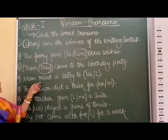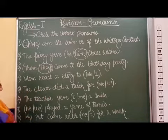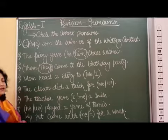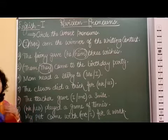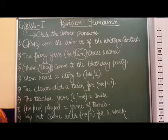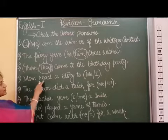Okay. Then we will circle here. Mom read a story to me or I. If I talk about I, Mom read a story to I, so it is not correct. We will circle me.